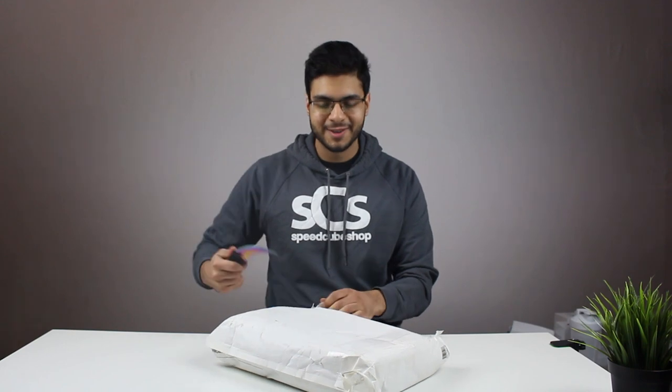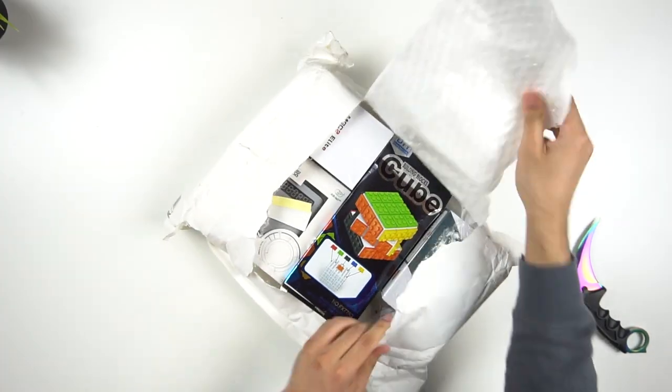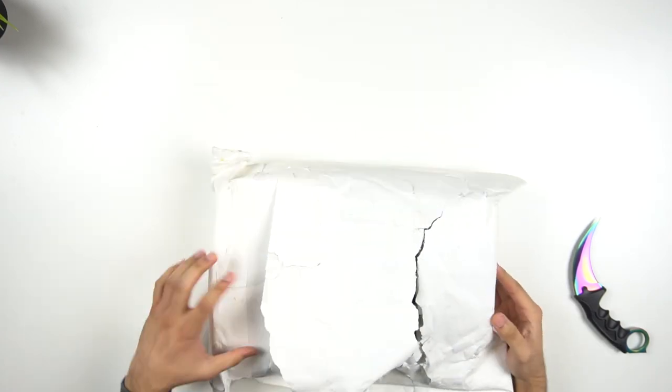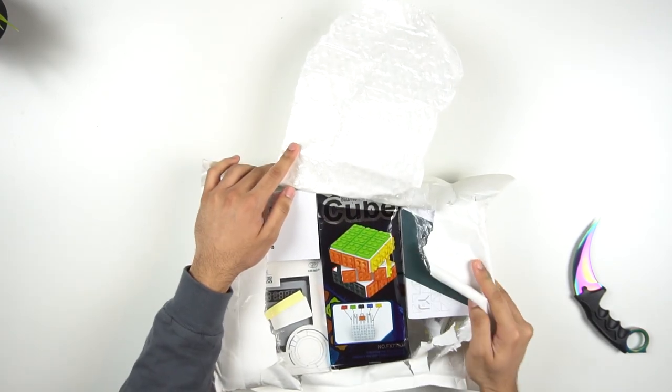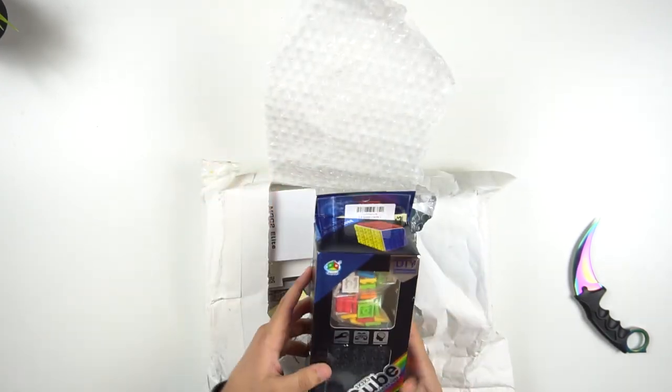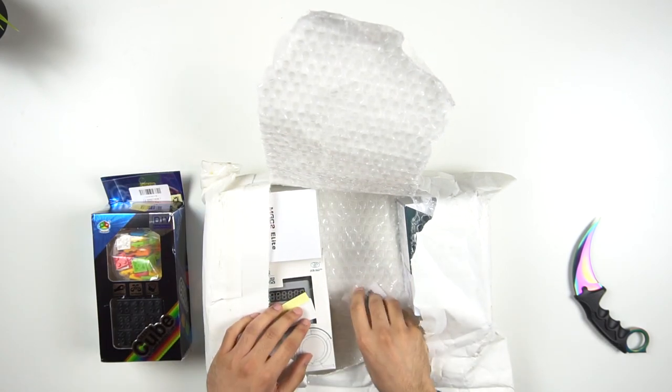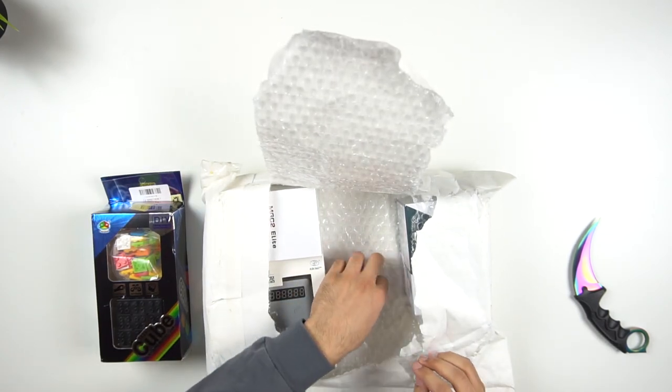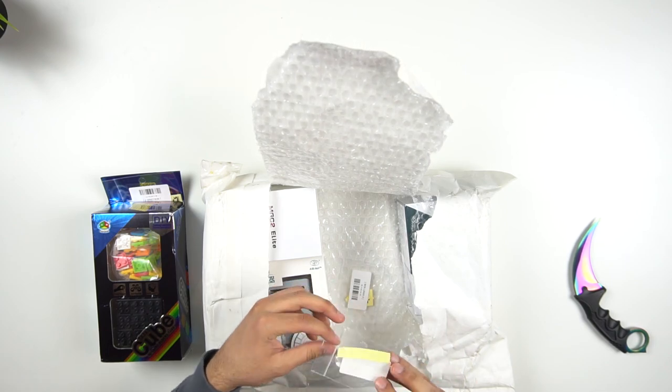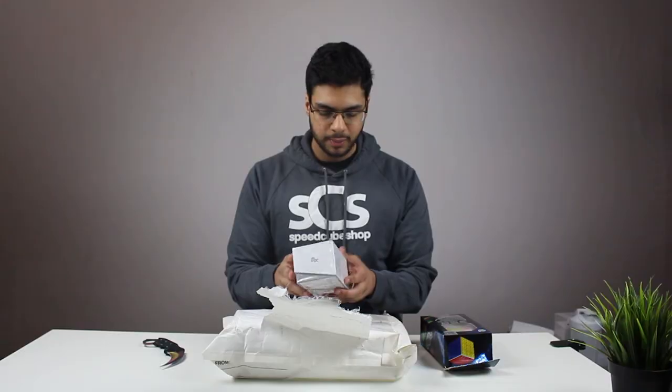Yeah, I definitely need to get a new karambit, this one is quite dull. Anyway, some of these cubes are actually kind of old because it took like a month for this to arrive through USPS, which is United States Postal Service. It's apparently really slow right now, and I'm also in Canada, which is probably why it was so slow.